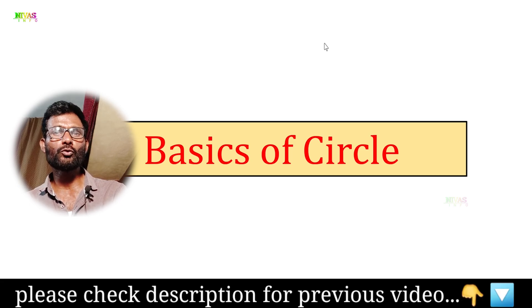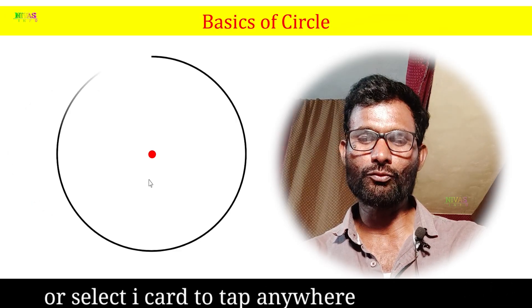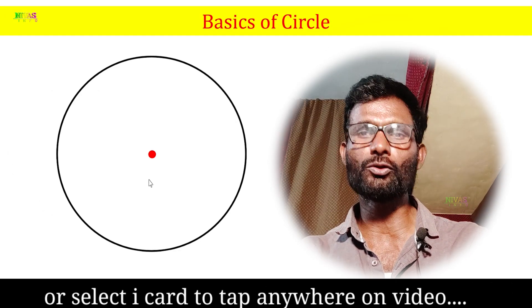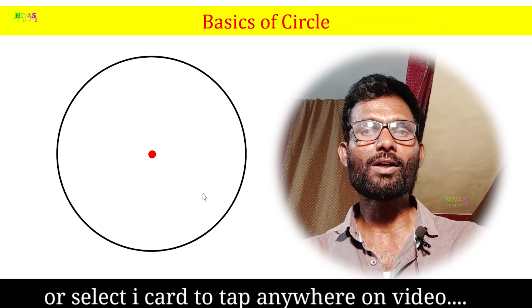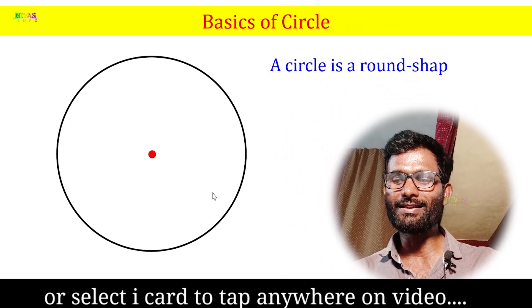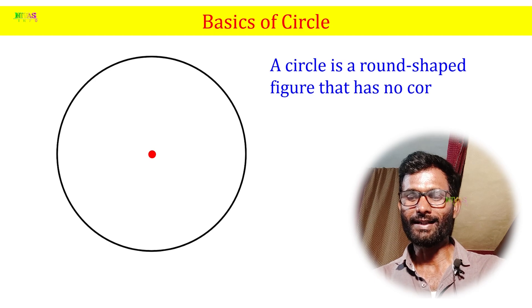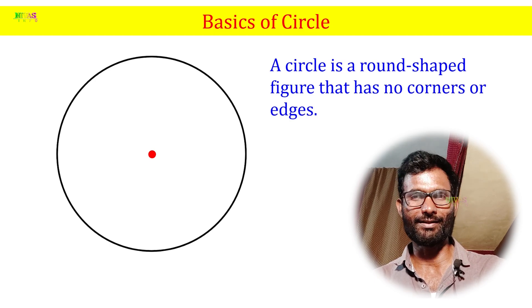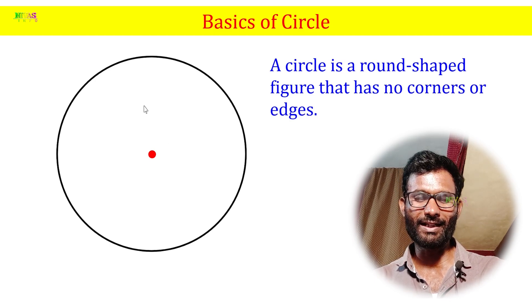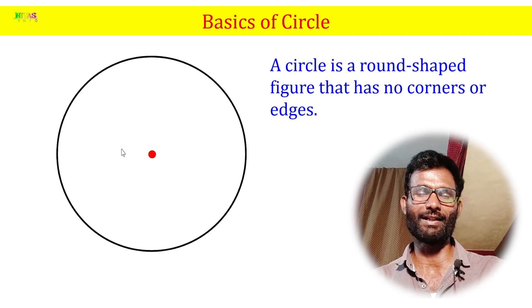We will first try the basics of a circle. What is the circle? A circle is a round shaped figure that has no corners or edges. It is a round shaped, closed figure.